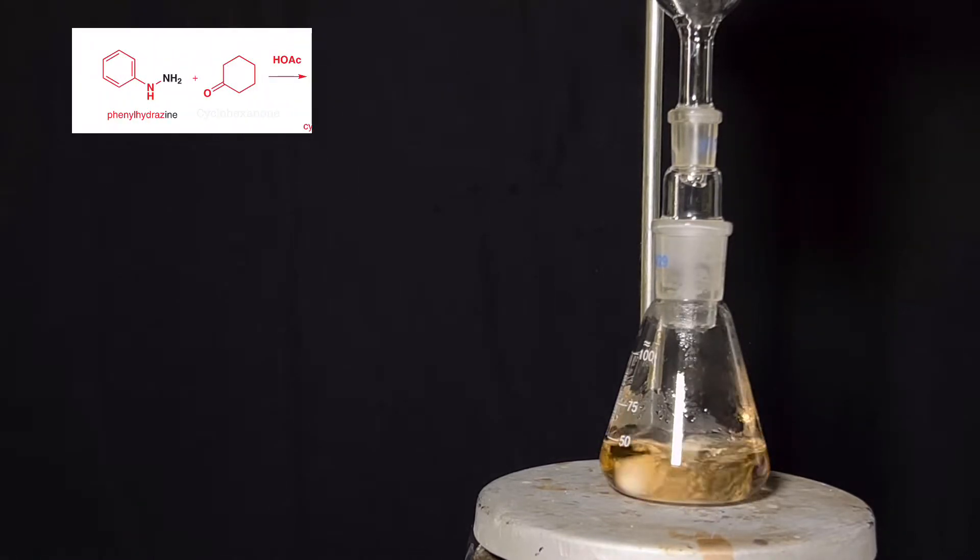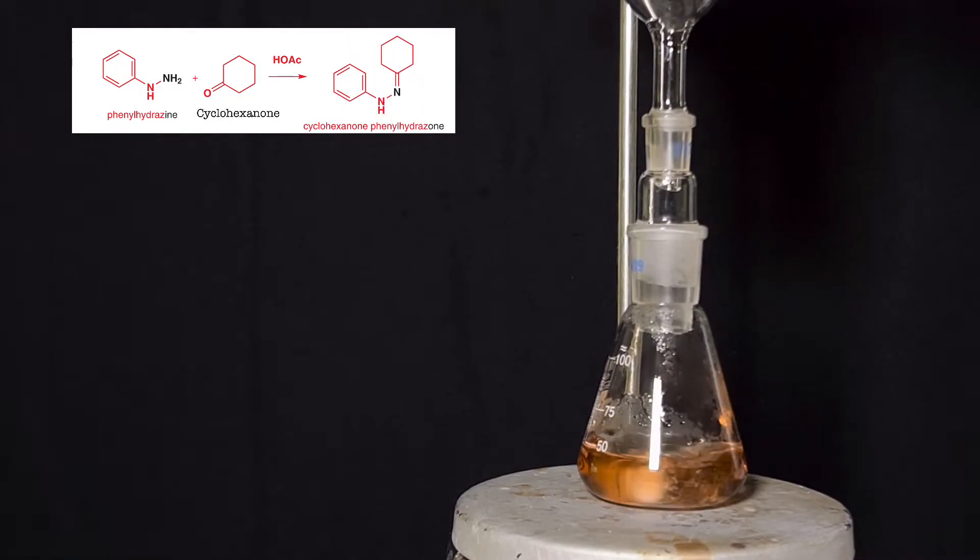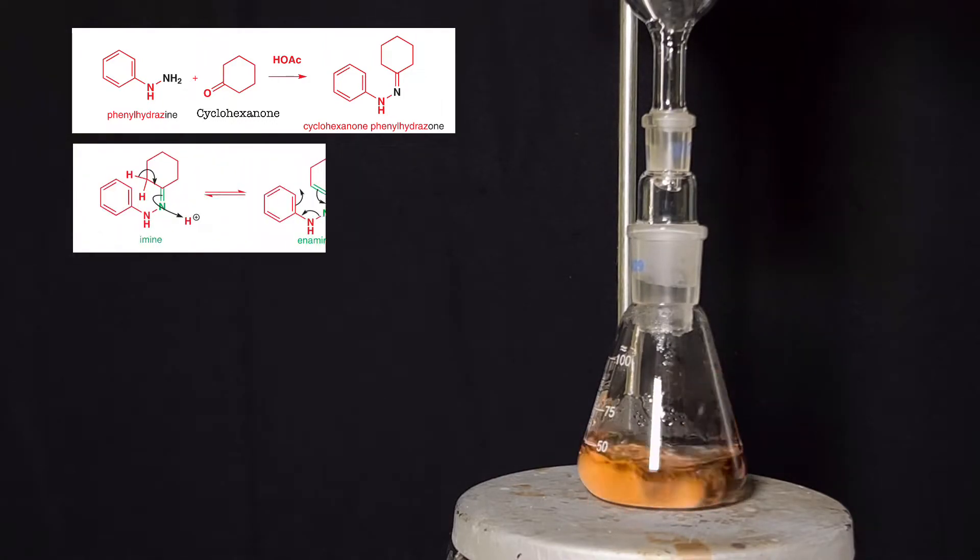Initially, phenylhydrazine condenses with cyclohexanone to form the cyclohexanone phenylhydrazone. This hydrazone then tautomerizes to the enamine.